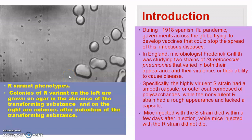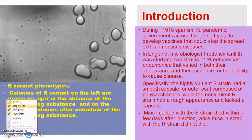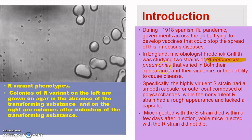During 1918, there was a pandemic called the Spanish flu. Governments, industries, and scientists were trying to develop vaccines to stop the spread of this pandemic. At the same time, in England, a microbiologist and bacteriologist named Frederick Griffith was working on the bacterium Streptococcus pneumoniae — also called Diplococcus pneumoniae — which is the causative agent of pneumonia.